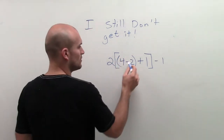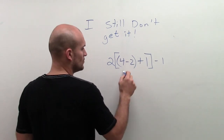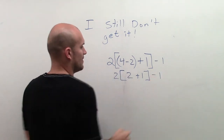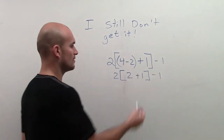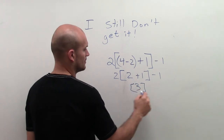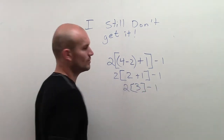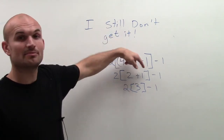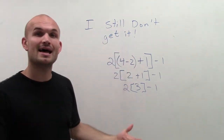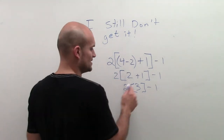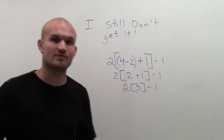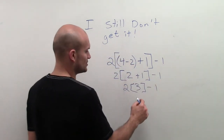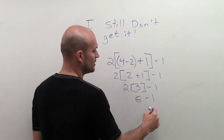So if I wanted to solve this problem: 4 minus 2, which would be 2, plus 1. Then 2 plus 1 is 3, times 2, minus 1. What you can see is I simplified the parentheses first to give me 2. Then I simplified everything in the bracket. Now I can do the multiplication and subtraction from left to right. So 2 times 3 is 6, then minus 1, which is 5.